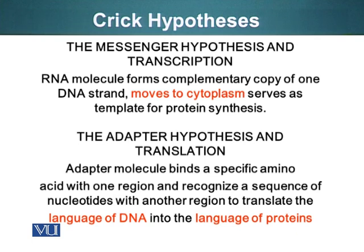The second question was how translation takes place. Dr. Crick proposed an adapter — a molecule that can bind a specific amino acid with one region, and can recognize a sequence of nucleotides with another region, to translate the language of DNA into the language of proteins. So the adapter would have the ability to interact with amino acids, the basic building blocks of proteins, and another domain able to recognize specific nucleotide sequences on the messenger RNA.